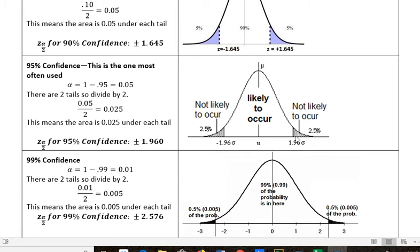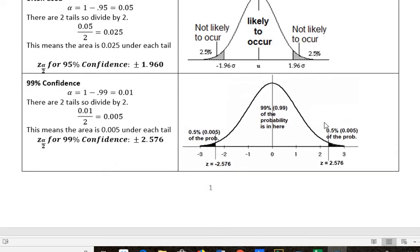1.96 is the boundary that separates the likely from the not likely to occur values. For 99% confidence, we do the same thing: 1 minus 0.99, then divide by 2 because we put that probability into the two tails. If this area is 0.005, the Z score associated with that is 2.576.